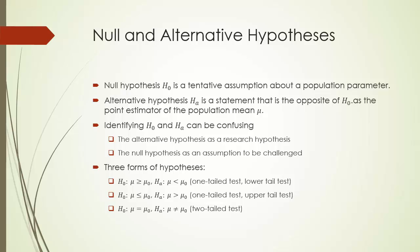The second form is upper tail test. H0 is given as mu less than or equal to mu zero, and HA is mu greater than mu zero. A convenient way to memorize upper and lower tail test is to look at the alternative hypothesis. On an axis of real numbers, if the alternative hypothesis is mu greater than mu zero, then the focus is on the right-hand side of mu zero, which is the upper tail on the real axis. The third and last form is two-tailed test. The null hypothesis H0 is mu equals mu zero, and the alternative hypothesis HA is mu is not equal to mu zero.